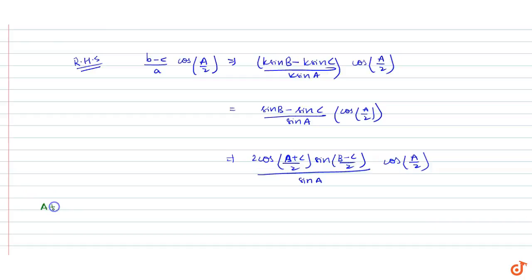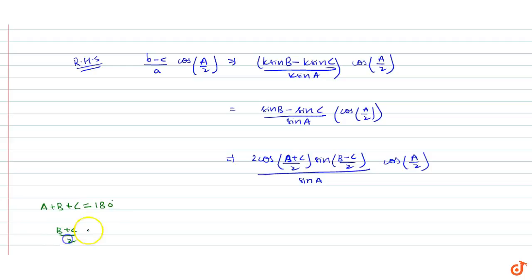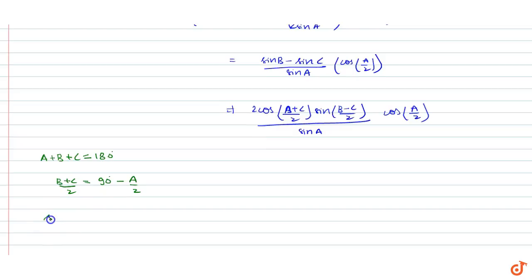Now since A + B + C = 180° in a triangle, (B+C)/2 = 90° - A/2. Therefore cos((B+C)/2) = cos(90° - A/2) = sin(A/2), since cos(90° - θ) = sin θ. So we get 2·sin(A/2)·sin((B-C)/2)·cos(A/2) upon sin A.